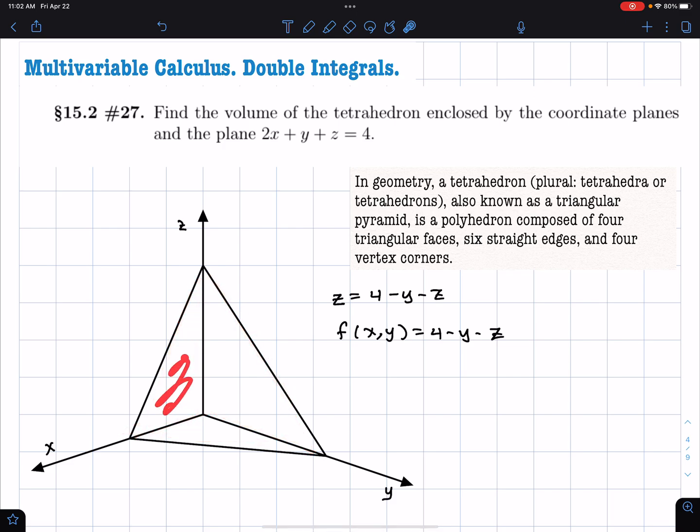Here we have this plane that's the last remaining side of our tetrahedron. So we have the x, z plane, the y, z plane, the x, y plane, and then finally we have this plane given by 2x plus y plus z equals 4.